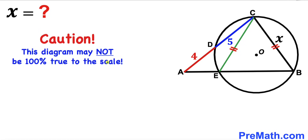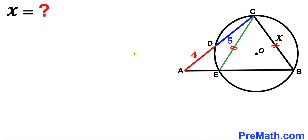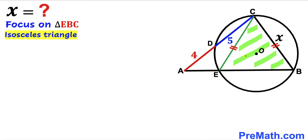Keep in mind that this figure may not be 100% true to scale. Let's get started. For our very first step, let's focus on triangle EBC. We can see that this is an isosceles triangle since the two side lengths EC and BC are equal.